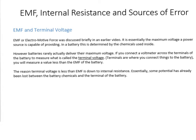First of all, EMF and terminal voltage. So far we've assumed all of the cells or power sources we are using don't have any internal resistance, so they deliver their full EMF to the circuit. Whereas in practice that's not what happens — there are always losses inside a battery, and that's called internal resistance.